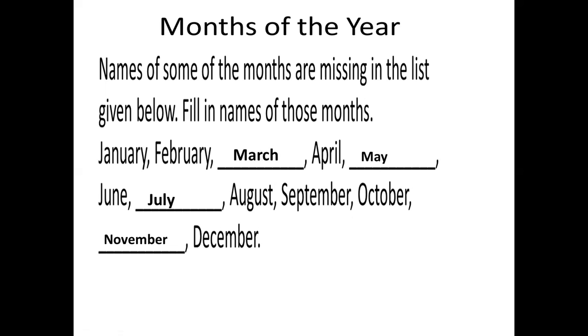So, a year has how many months children? 12 months. Very good.